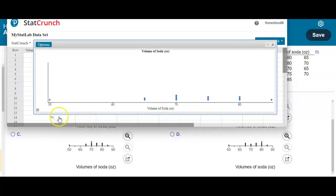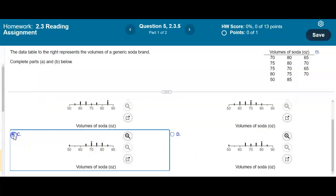So here at 50, we have one dot. Okay. And then at 65, we have two dots. And over here we have three. And there we have two. And then here we have one, two, three, four. And there's one, two, three, four. So it looks like our answer is going to be C.